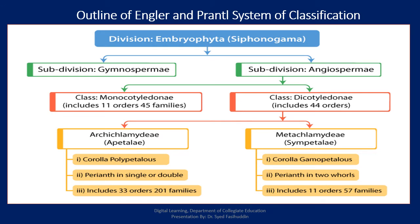This is the outline of the Engler and Prantl system of classification. The 13th division, Embryophyta Siphonogamma, is divided into two subdivisions: Gymnospermae and Angiospermae. Angiospermae is again divided into two classes — Monocotyledons and Dicotyledons. The Dicotyledons are again divided into two groups: Archichlamydeae and Metachlamydeae.